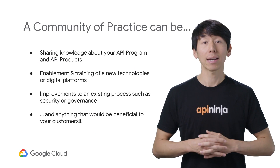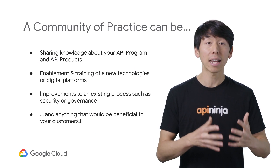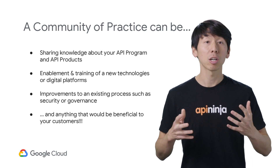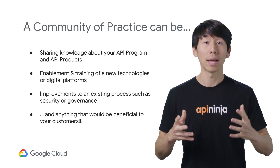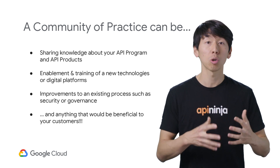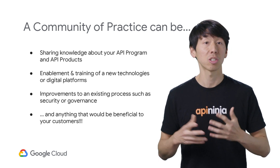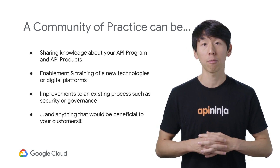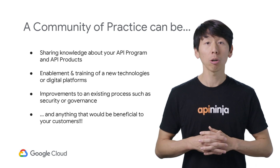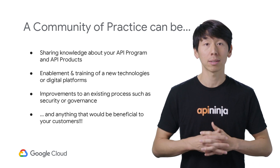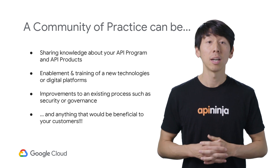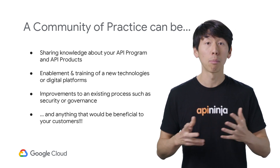A Community of Practice can also be a way to share knowledge and grow your API program. It can be a group that is set up to help enable and train new technologies or digital platforms, such as Apigee and the Google Cloud Platform. Communities of Practice may also be formed to help improve internal processes around topics like governance, security, documentation of APIs, and more.